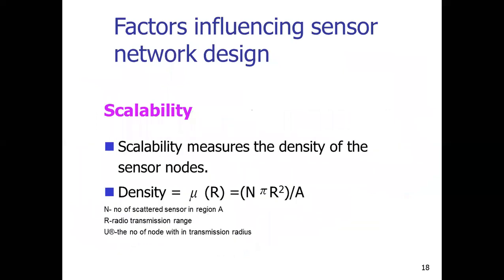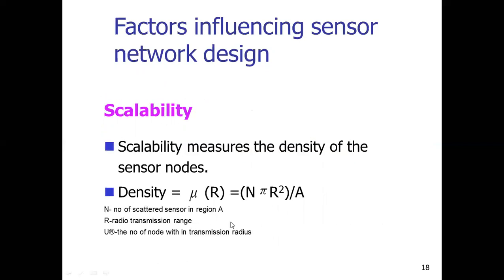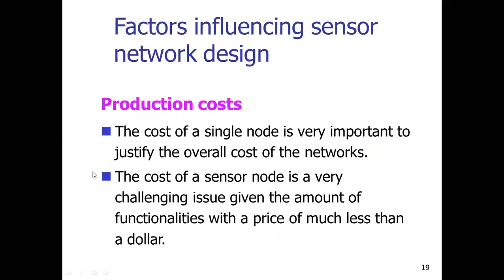Scalability measures the density of sensor nodes. The density is given by the formula: μ(r) = N × π × r² / A, where N is the number of scattered sensor nodes in region A, r is the radio transmission range, and μ is the number of nodes within transmission radius, where A is the area. Cost is also a very important factor — the cost of a single node determines the overall sensor network cost.